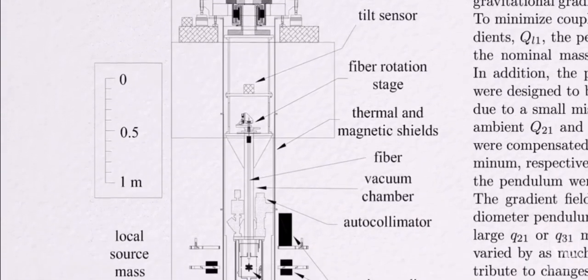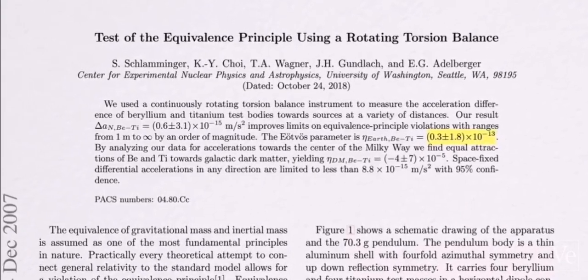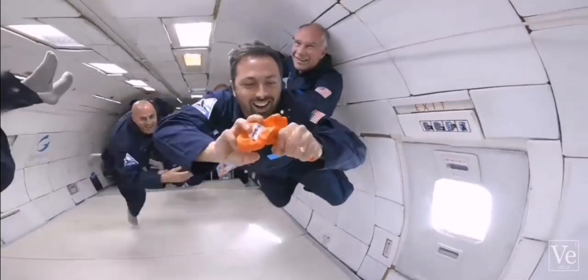Scientists have spent a lot of time and effort experimentally testing, down to around one part in ten trillion, that these two types of mass really are the same. But in general relativity, there is no mystery.